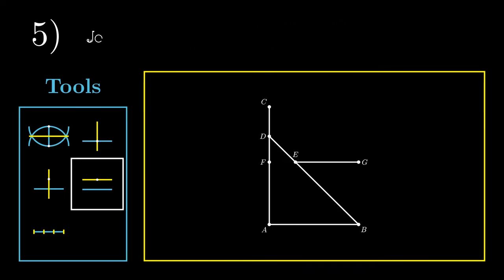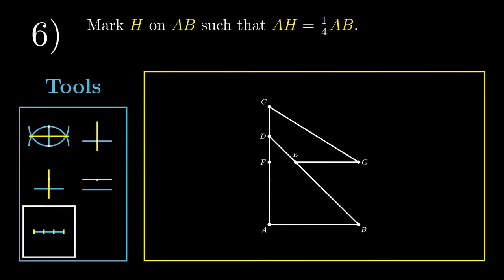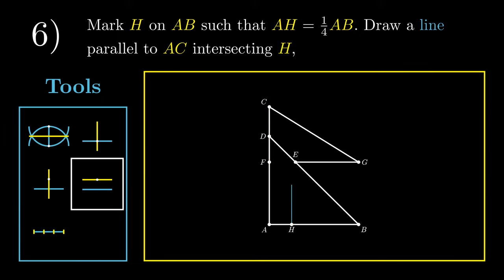For step 5, we're going to join G. For step 6, we need to mark H on AB such that AH equals a quarter of AB. This requires us to subdivide line AB into four equal segments, and the first point of intersection is point H. Now we're going to draw a line parallel to AC intersecting H, and this line would intersect CG at point I.